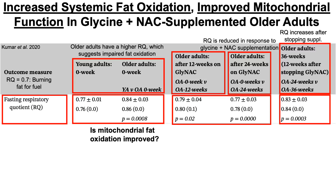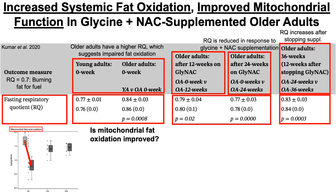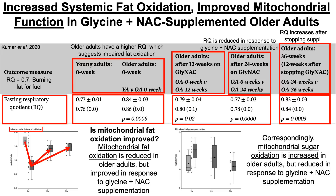Is mitochondrial fat oxidation involved? Mitochondrial fat oxidation in older adults was worse compared with young, but improved at both the 12- and 24-week time points with supplementation. Correspondingly, older adults had higher mitochondrial sugar (glucose) oxidation than younger adults to meet energy demands, but after supplementation, sugar oxidation levels were reduced — down to levels similar to those found in younger adults.